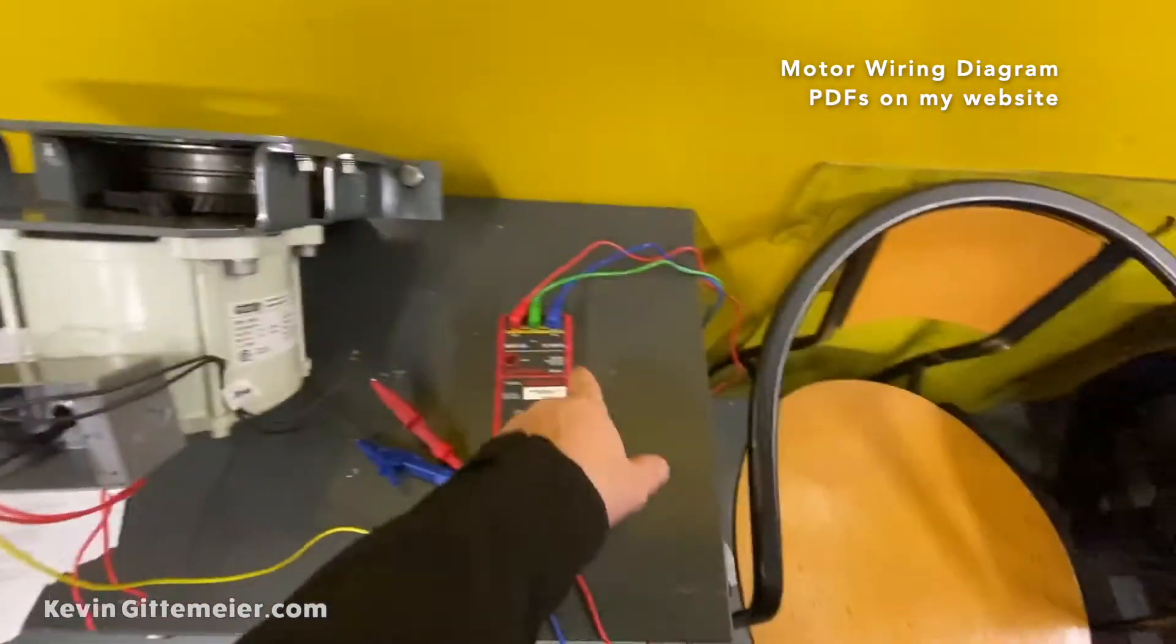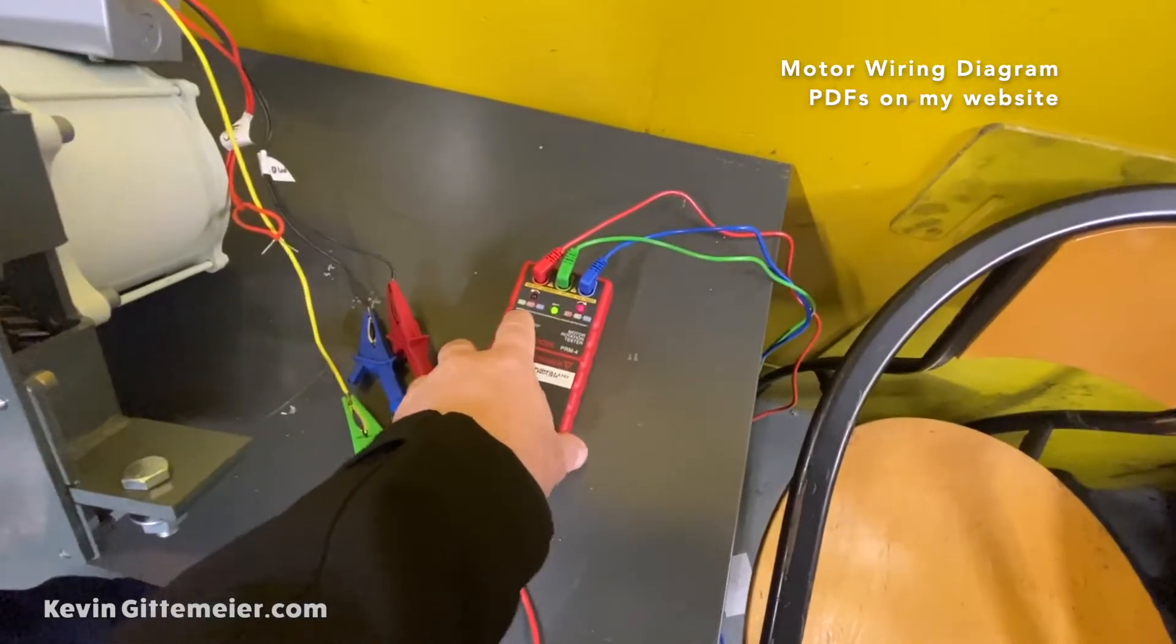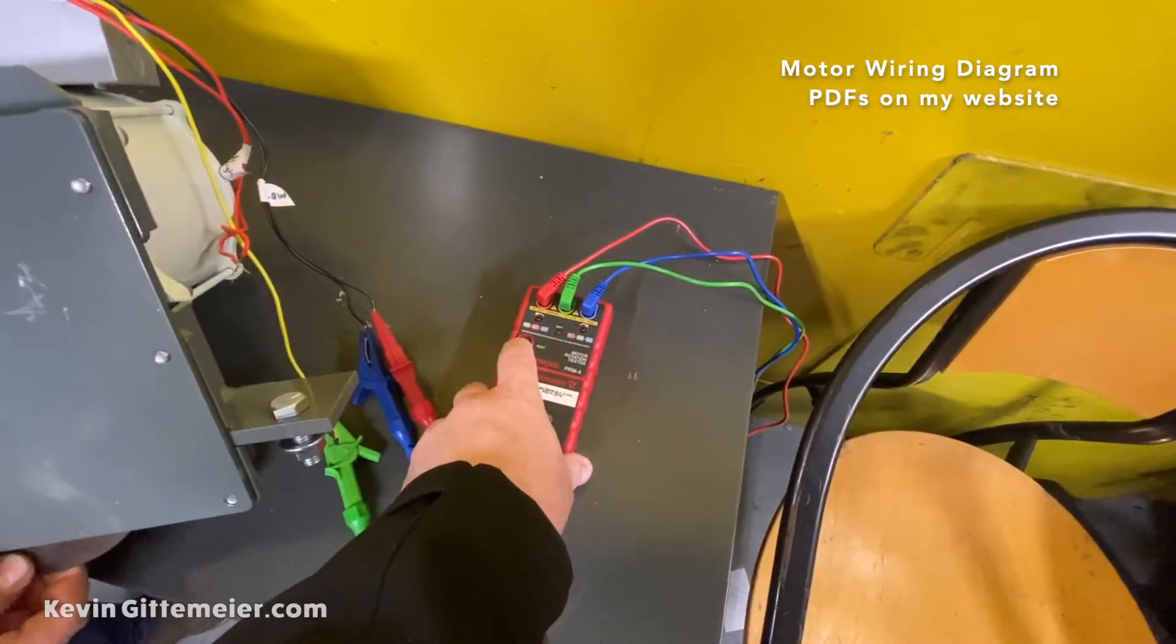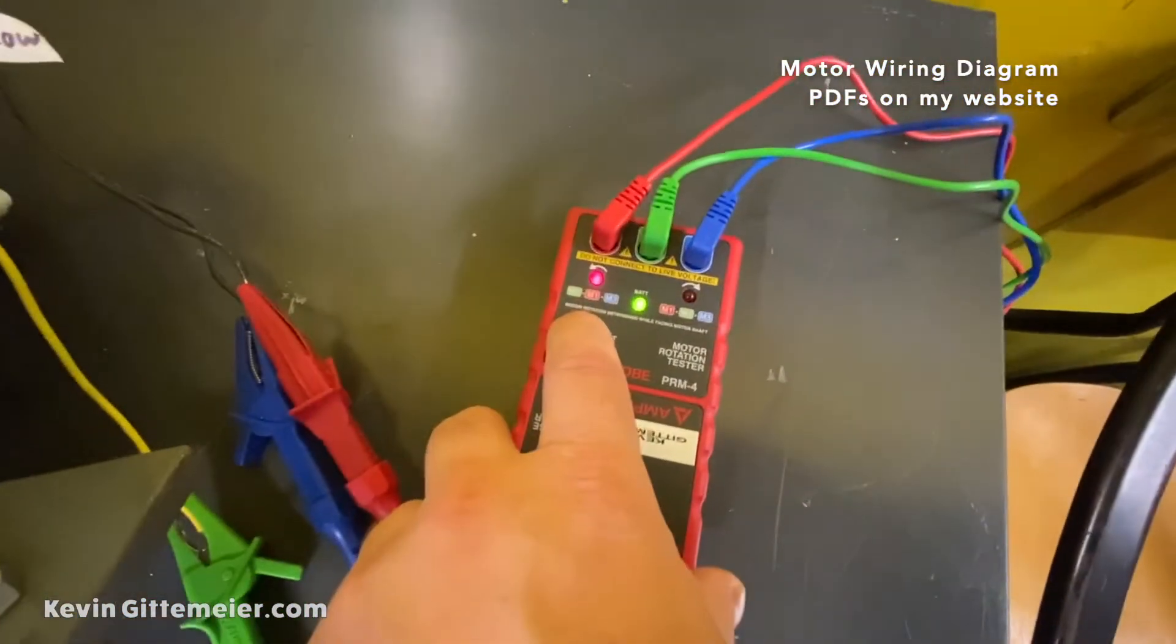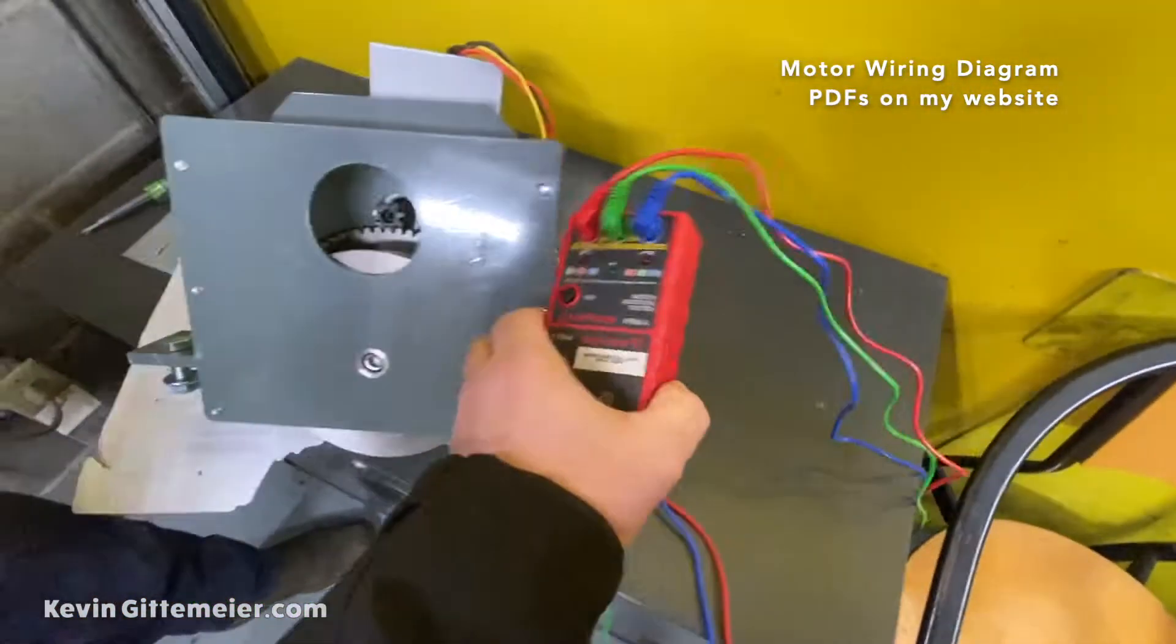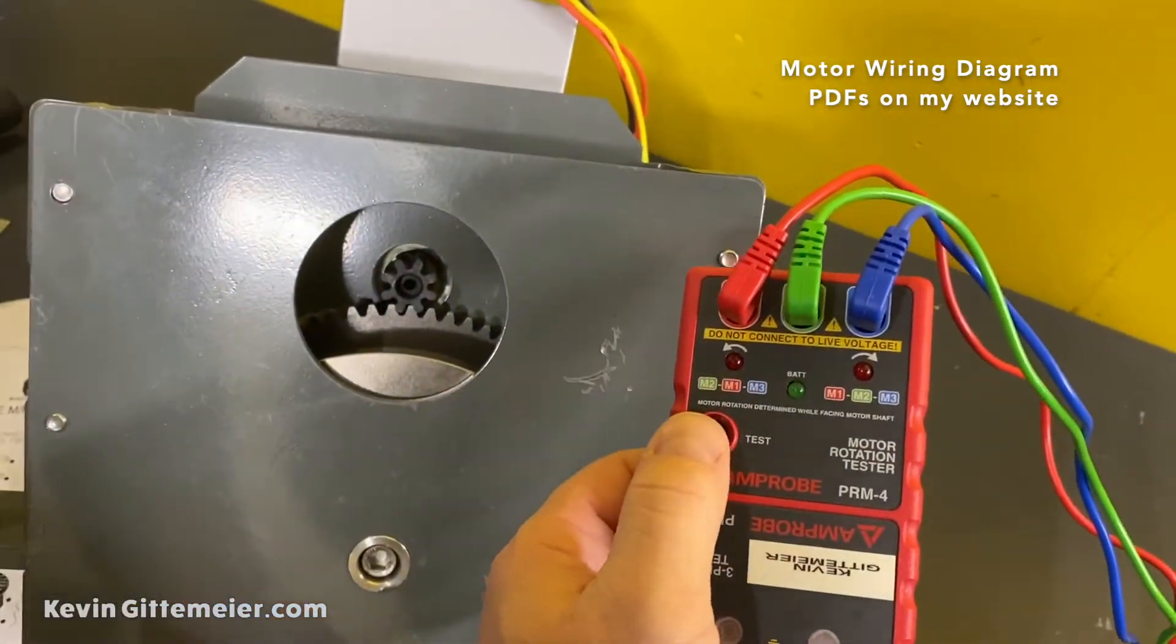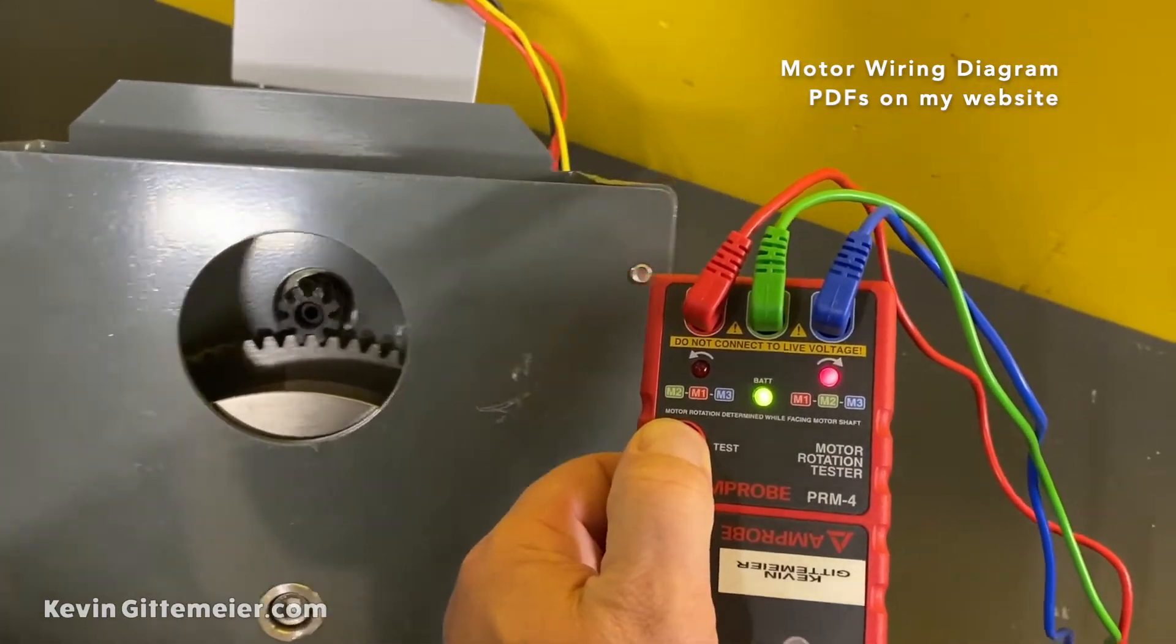I'll turn this shaft clockwise and see if I get a clockwise rotation. I should get a clockwise here. All right, stop. Now go counterclockwise. All right, let me hold it up here. Okay, go clockwise again. Okay, so that's correct.